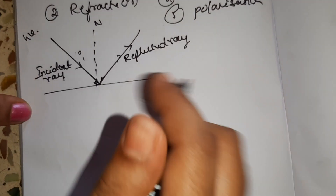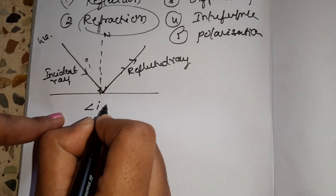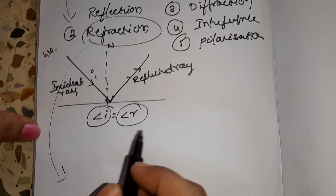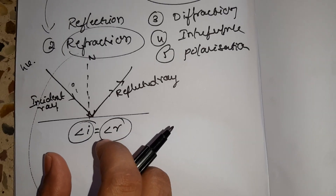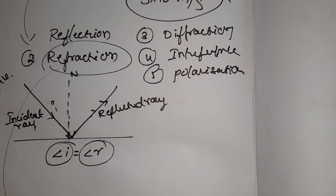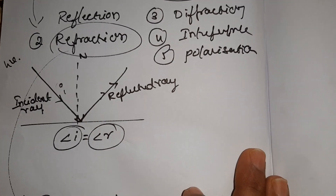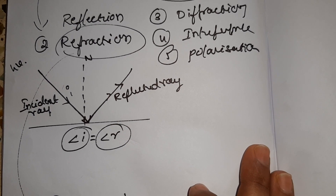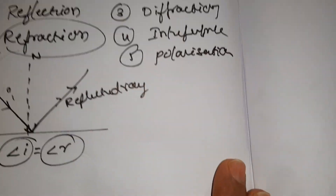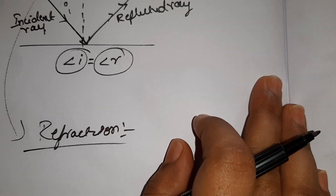This is the normal. Next is refraction. The bending of light is called refraction. It occurs when light travels between two mediums — for example, glass and water. For example, a pencil in water appears bent due to refraction as the light bends at the boundary of two mediums.